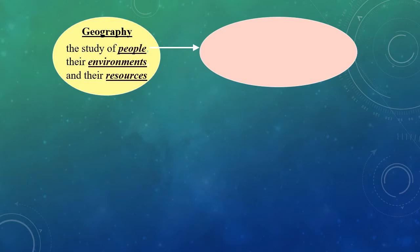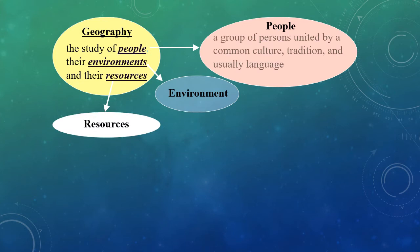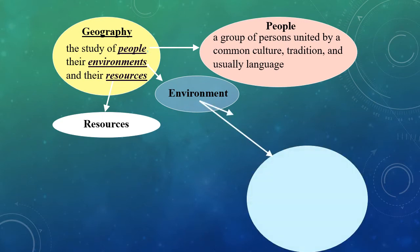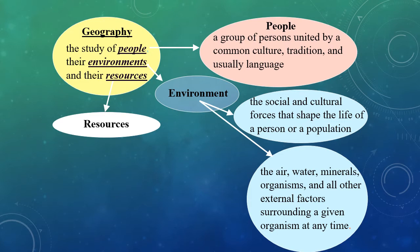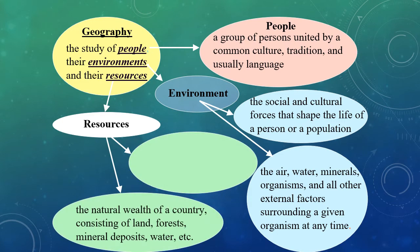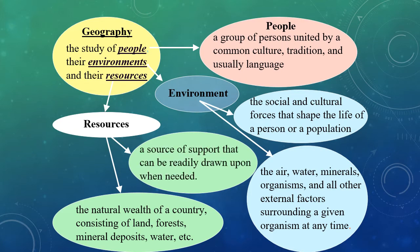Breaking this down further: people refers to a common group of persons united by a common cultural tradition and usually a language. Environment can be either the air, water, minerals, organisms, and all other external factors surrounding a given organism, or the social and cultural forces that shape the life of a person or population. Resources are the natural wealth of a country — land, forests, mineral deposits, water — and also a source of support that can be readily drawn upon when needed.